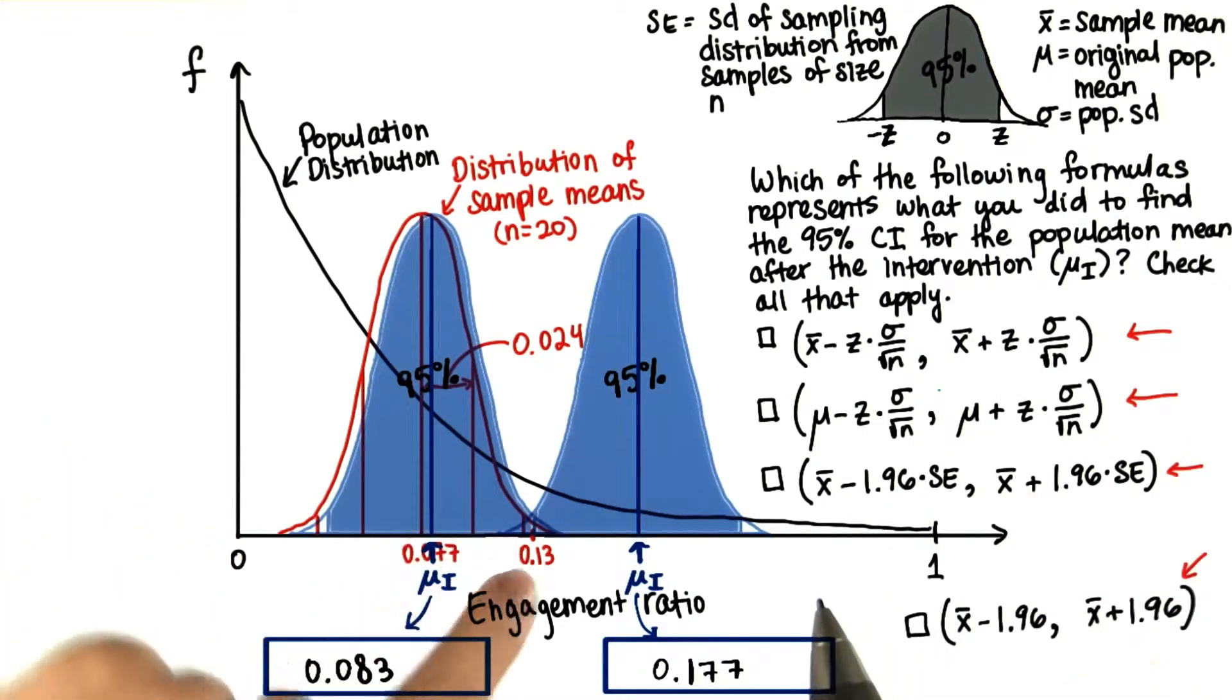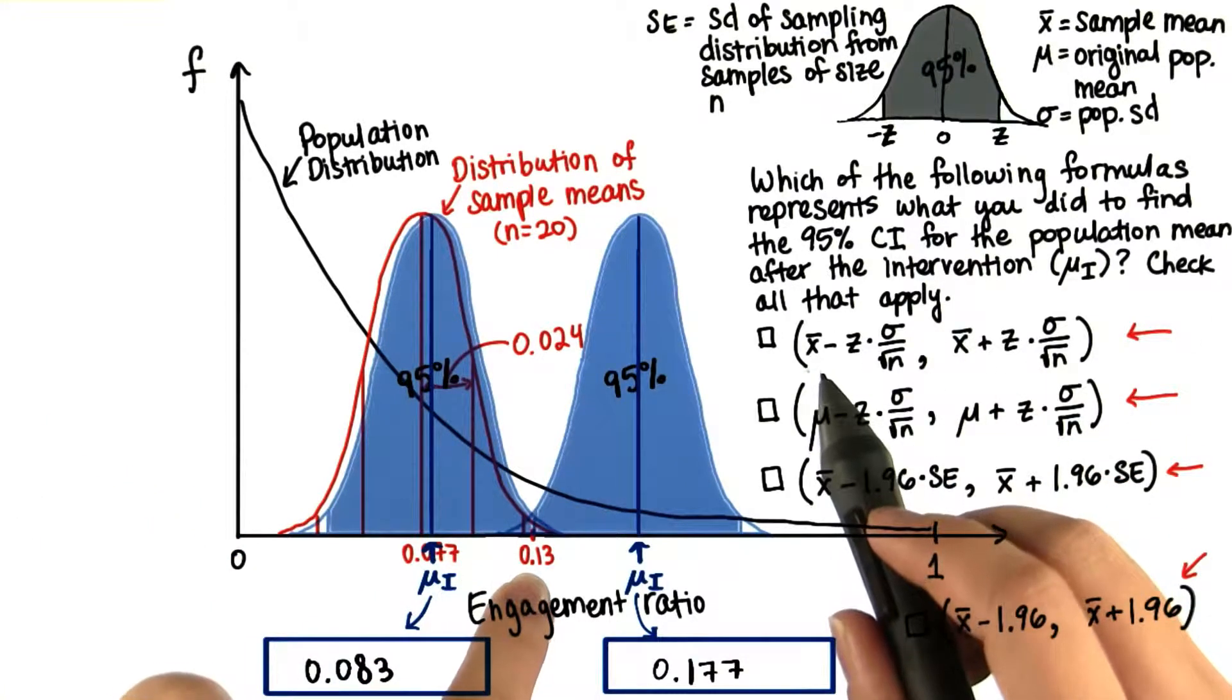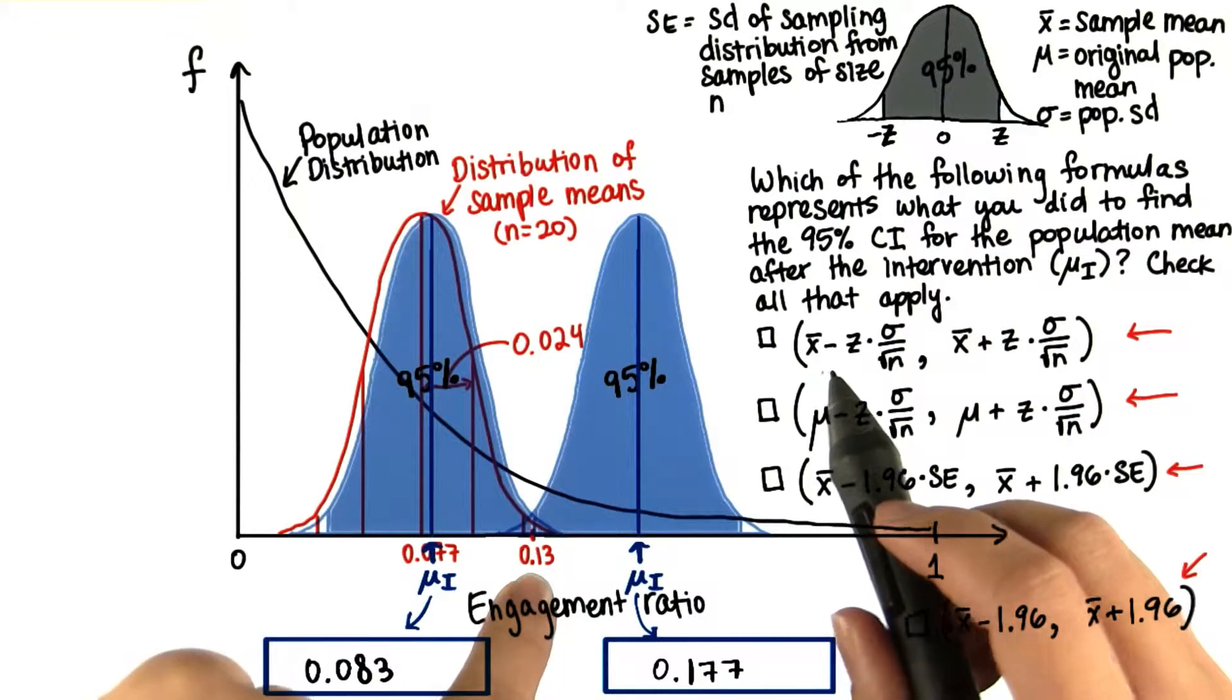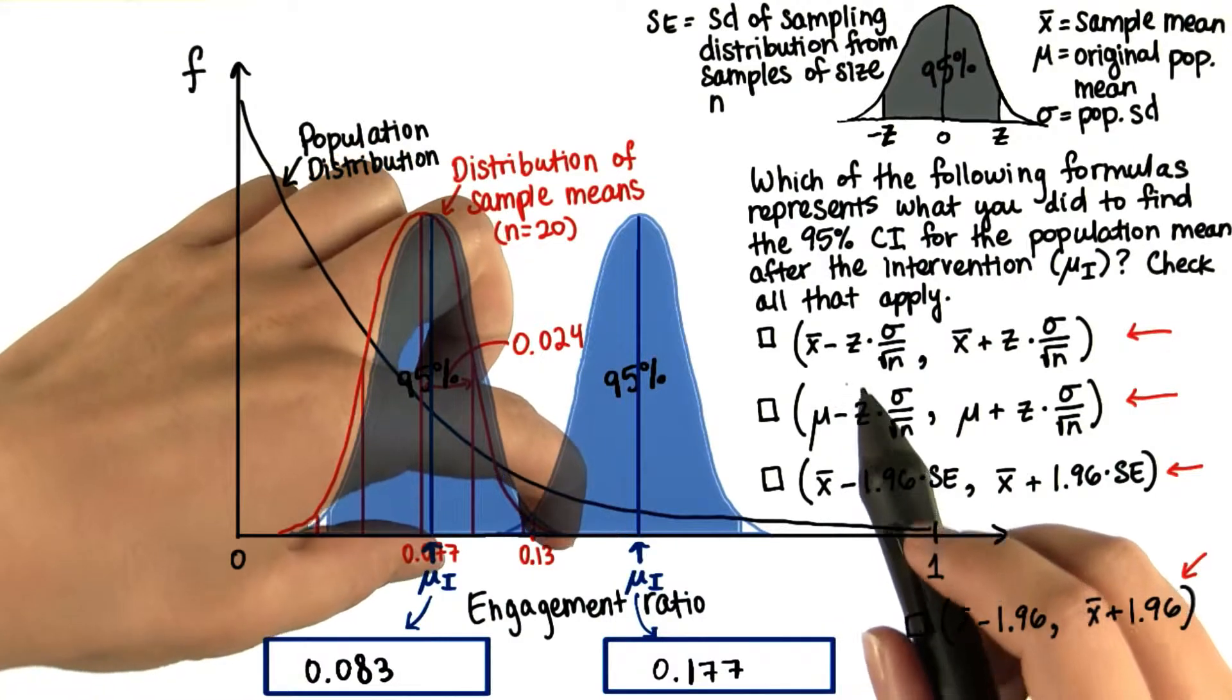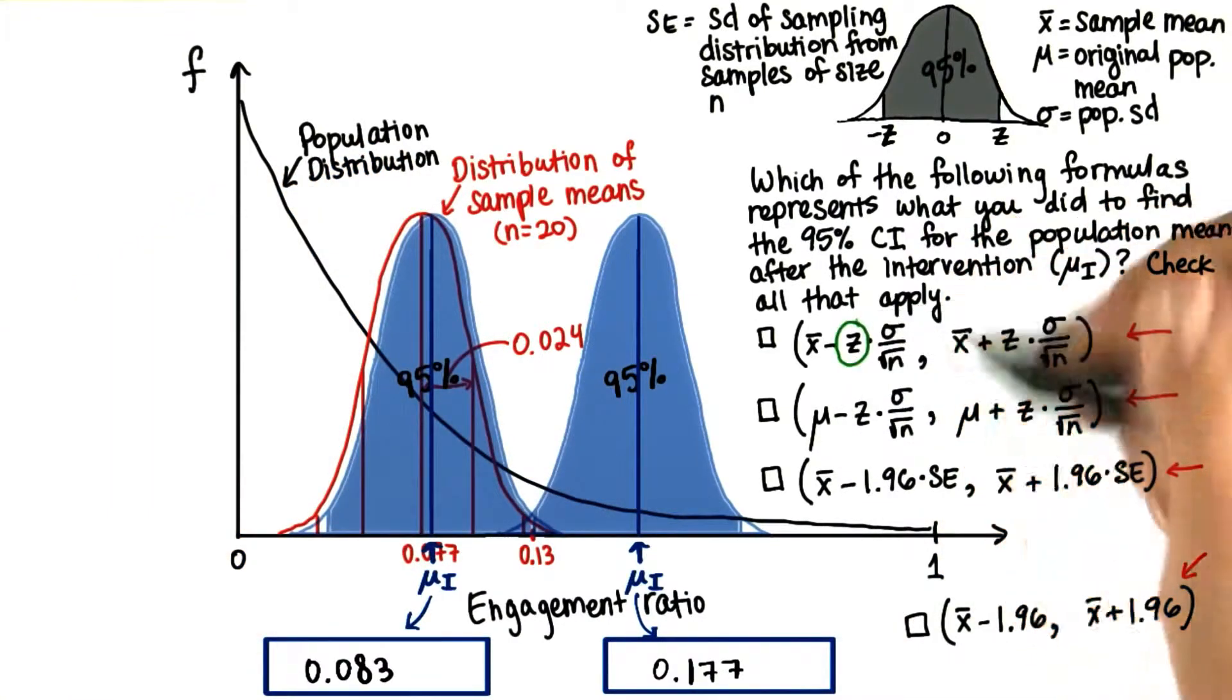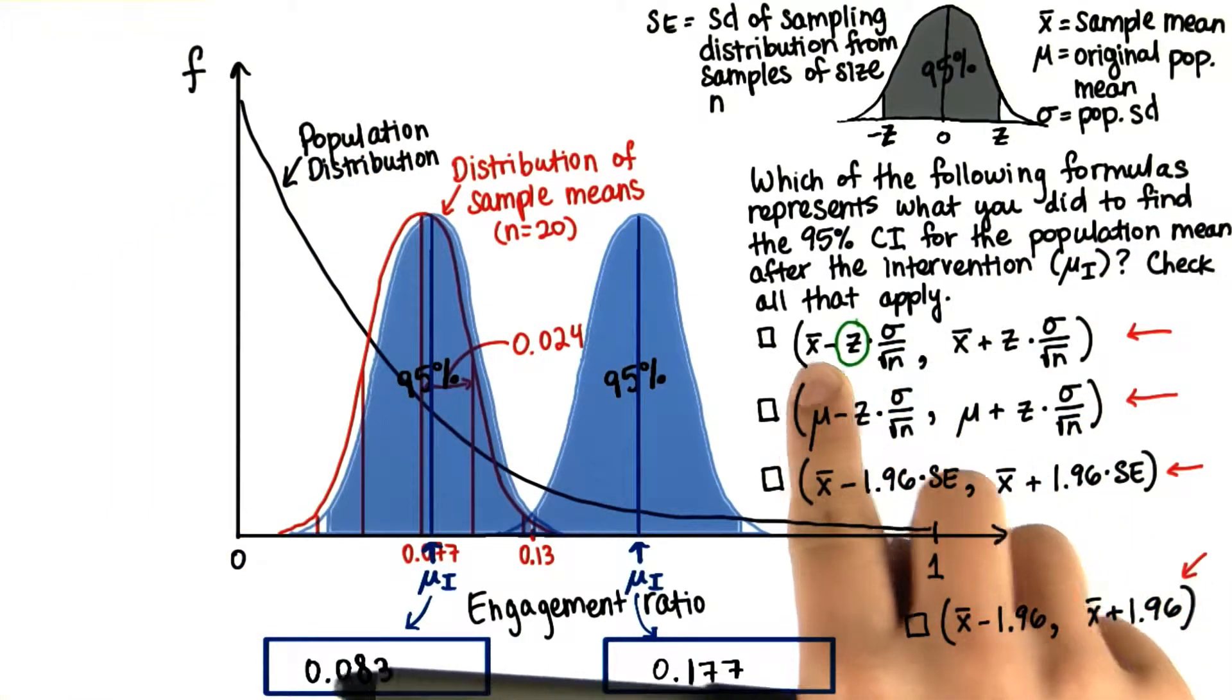Alright, so let's look at the first one. We have our sample mean x bar minus the z score times the standard deviation, meaning we have this number of standard deviations less than the mean.